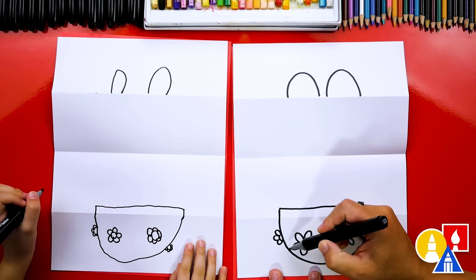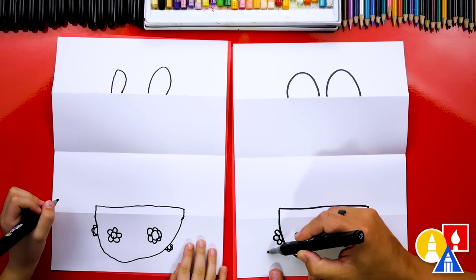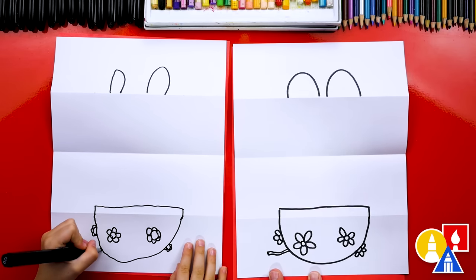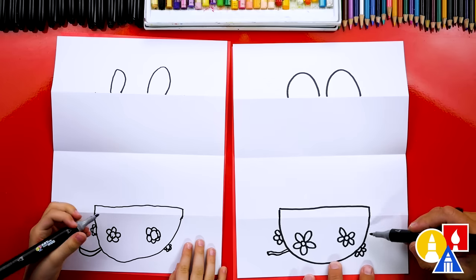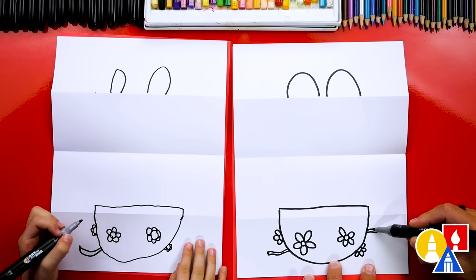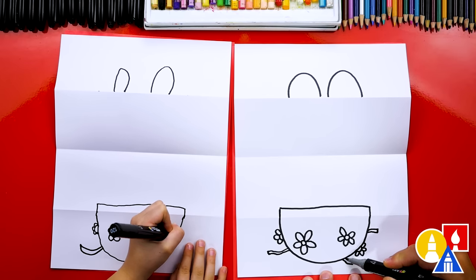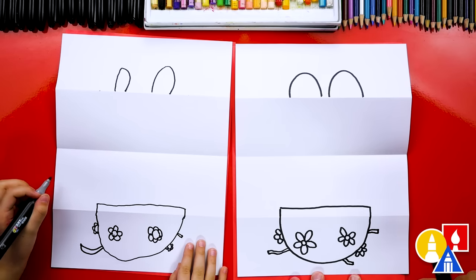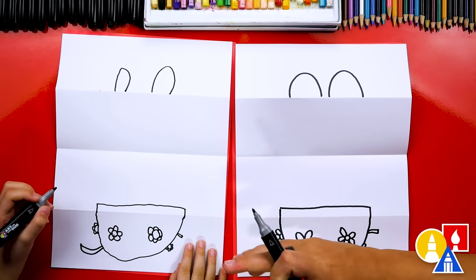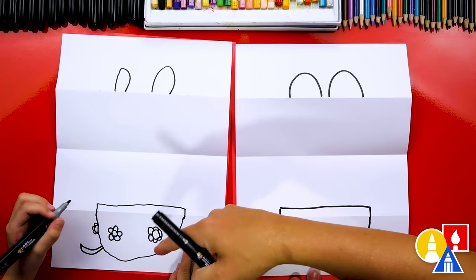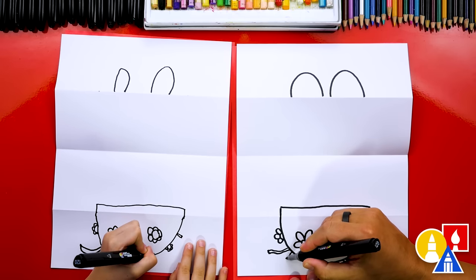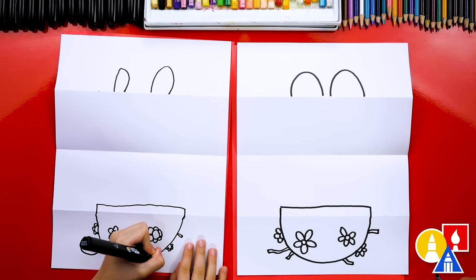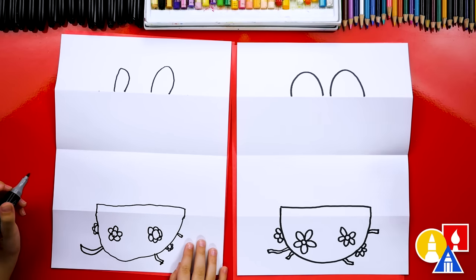Then we could also add a little branch sticking out. Let's draw another line right next to it and then connect it at the end. We could draw little small branches sticking out too. Now our friends can pause the video if they want and add even more details. You could draw a big branch that your nest is sitting on.